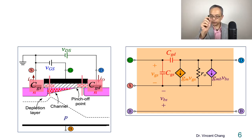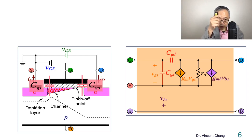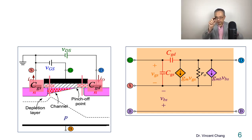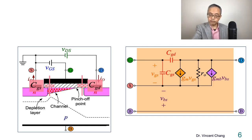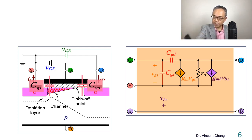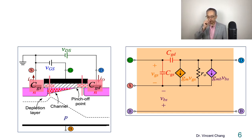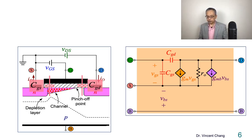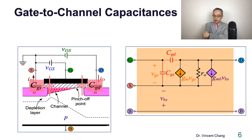Gate-to-source and gate-to-drain — these two capacitances actually refer to what you see on the left-hand side. Because when you use the small signal model, most of the time the device serves as an amplifier, so the device has to be in the saturation region. In saturation, the source end is non-pinch-off and the drain end is at the pinch-off point. So these two capacitances represent the gate-to-channel capacitances.